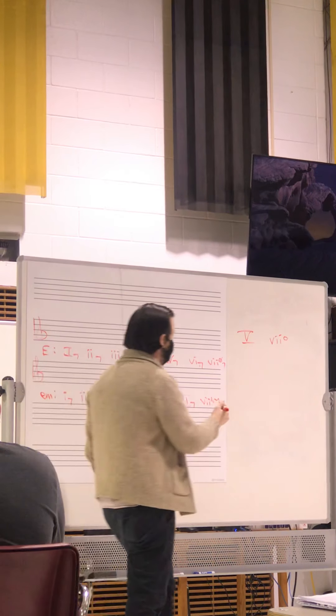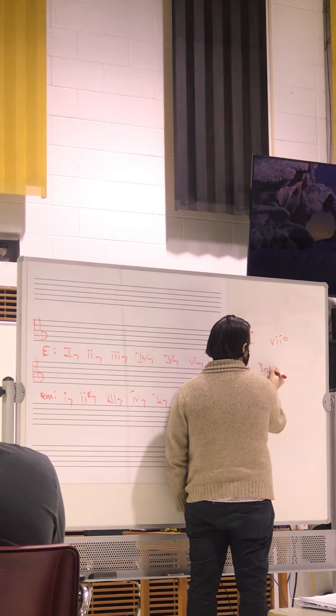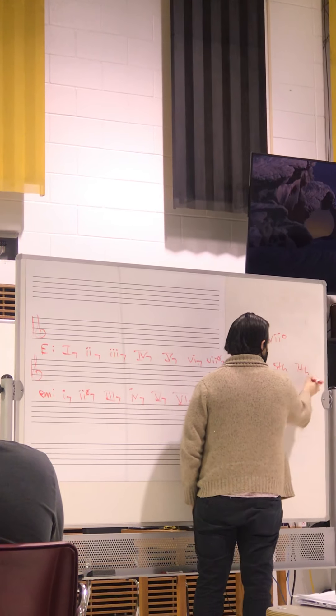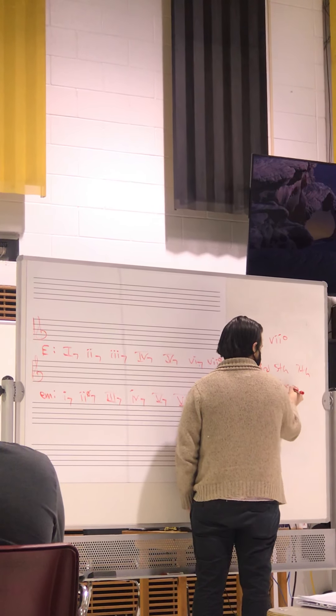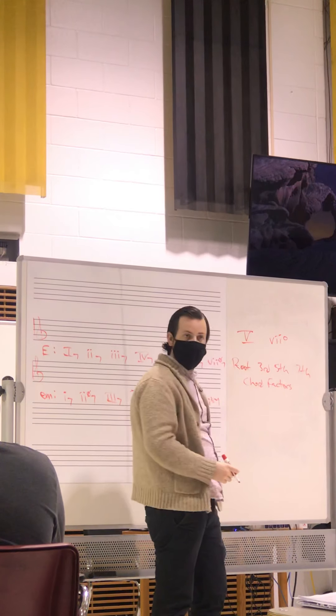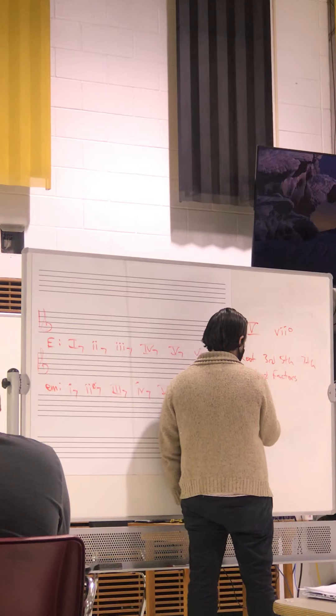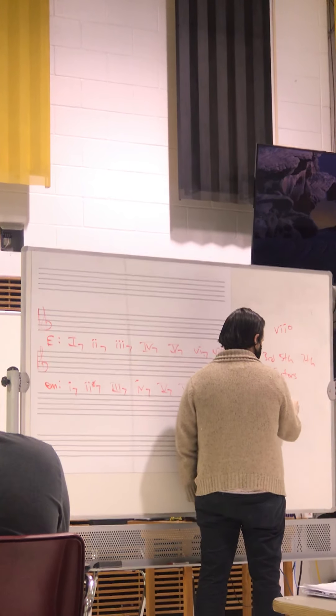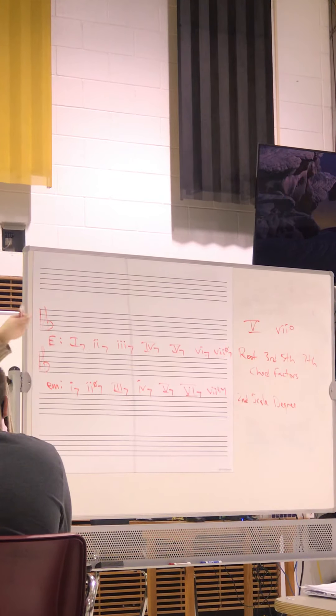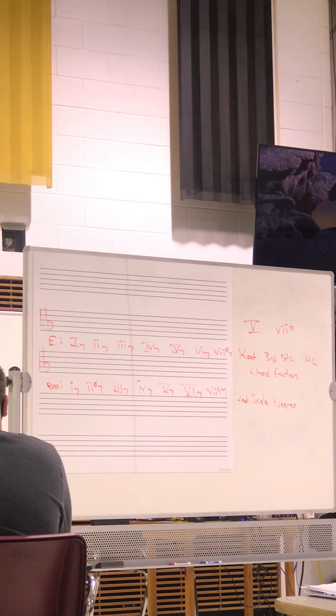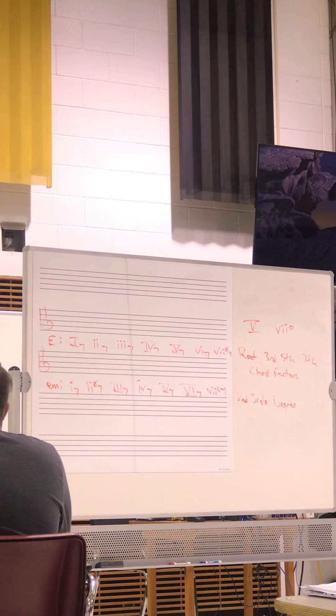If I say root, 3rd, 5th, 7th, I'm talking about chord factors. And if I say, insert number, 2nd, and I add scale degree, I'm talking about the individual note within the key. So there's a lot of different stuff. I'm still throwing a number out there, but it means different stuff.